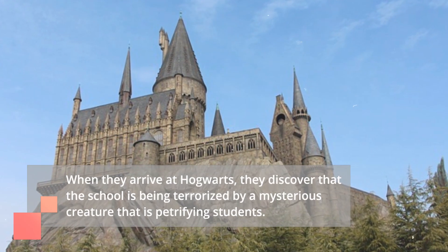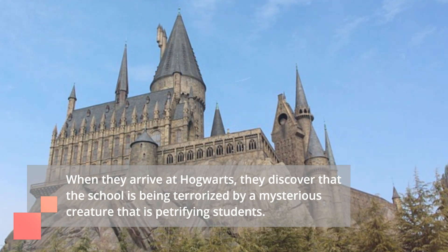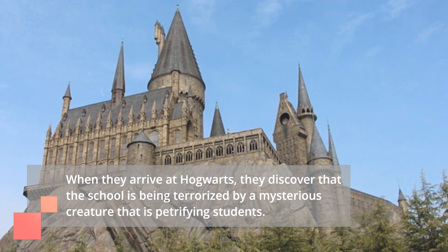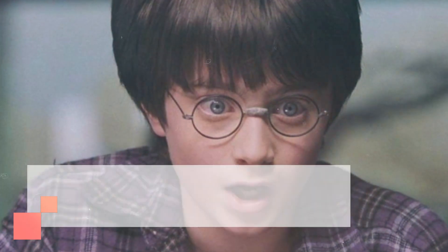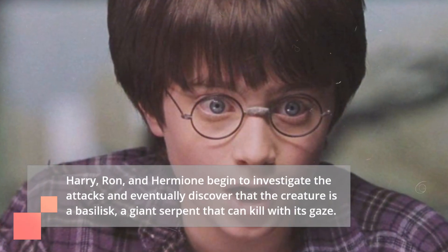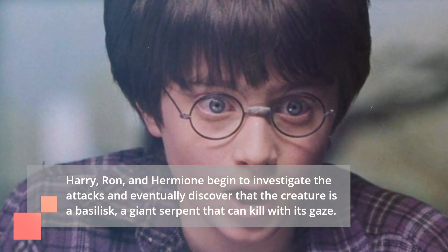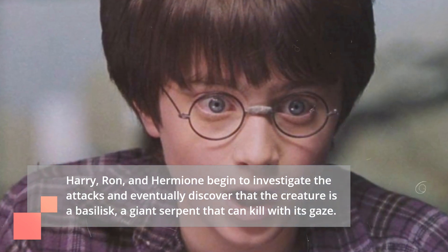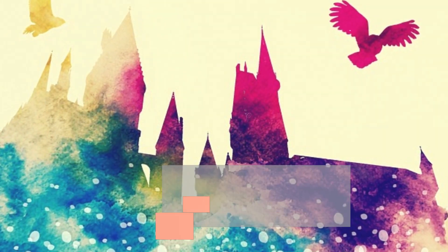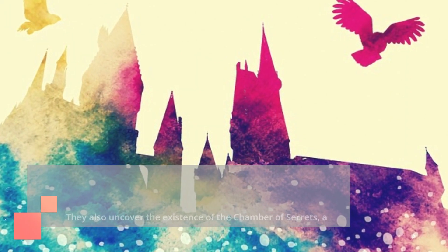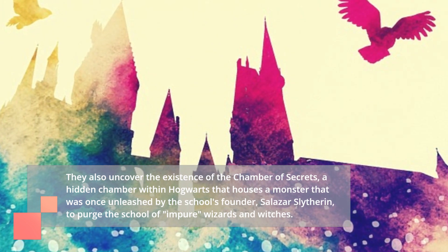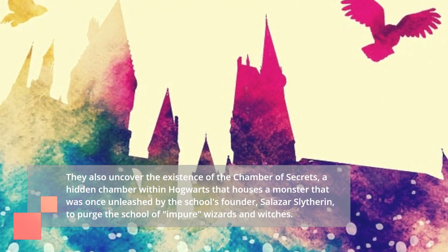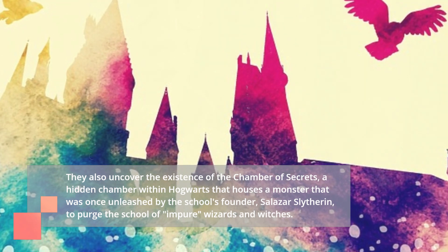When they arrive at Hogwarts, they discover that the school is being terrorized by a mysterious creature that is petrifying students. Harry, Ron, and Hermione begin to investigate the attacks and eventually discover that the creature is a basilisk, a giant serpent that can kill with its gaze. They also uncover the existence of the Chamber of Secrets, a hidden chamber within Hogwarts that houses a monster once unleashed by the school's founder, Salazar Slytherin, to purge the school of impure wizards and witches.